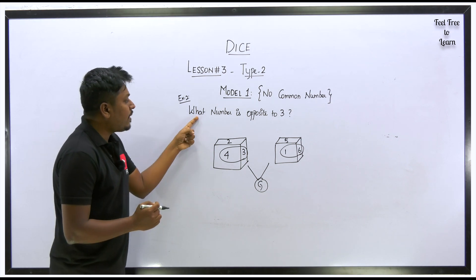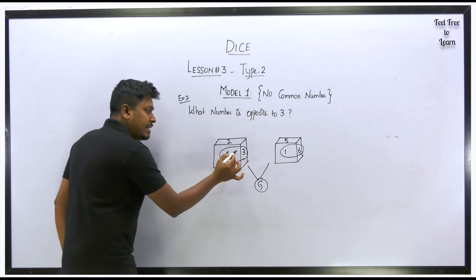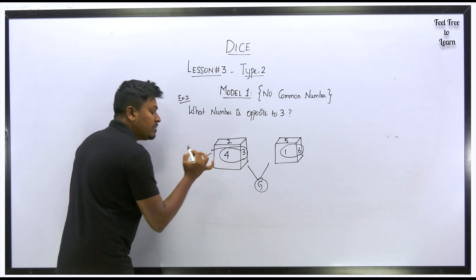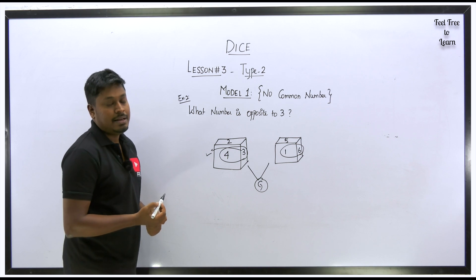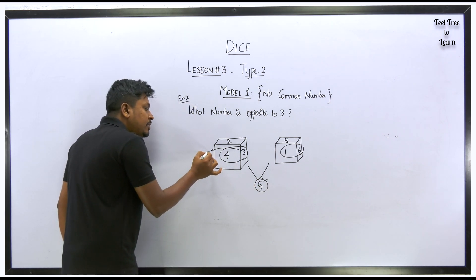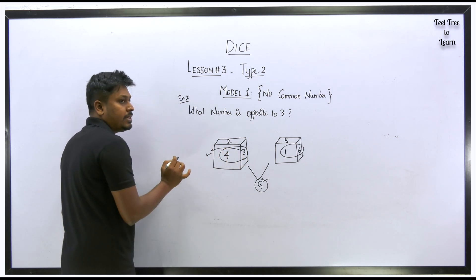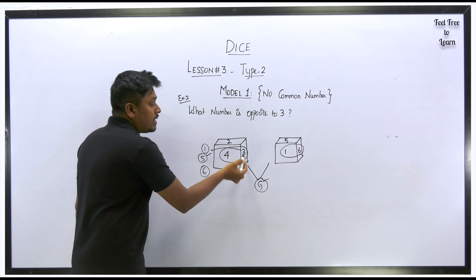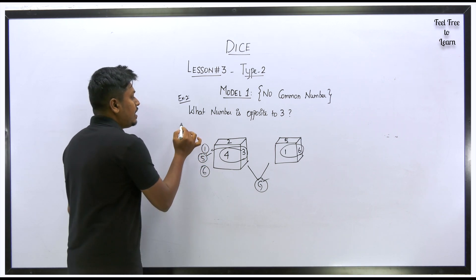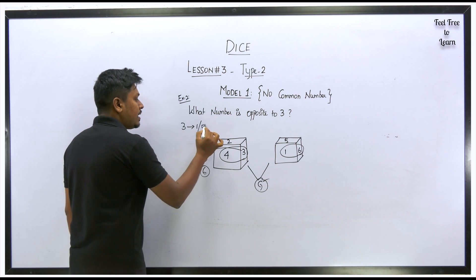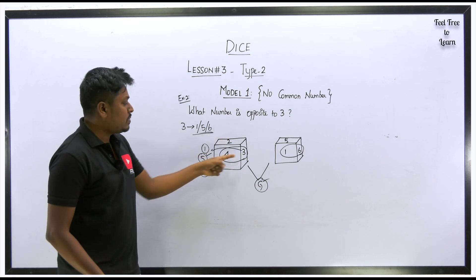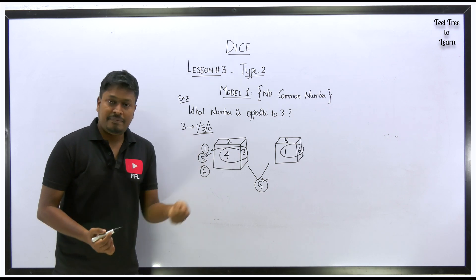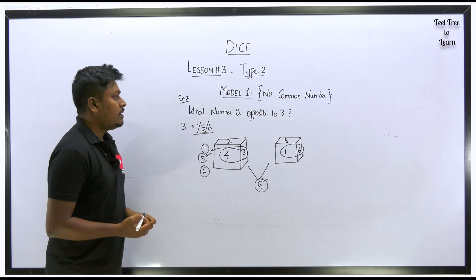Our target is to find the number opposite to 3. Because it is a general dice, we cannot predict exactly which number is opposite to 3. The numbers adjacent to 3 are 2 and 4, so the remaining numbers are 1, 5, and 6. Therefore the number opposite to 3 can be 1, or 5, or 6 — any of the three is possible.